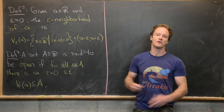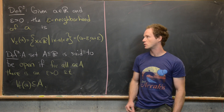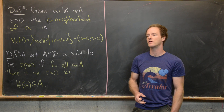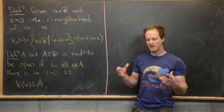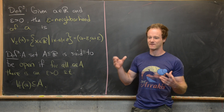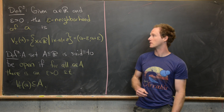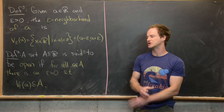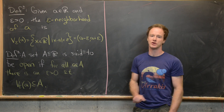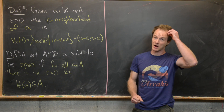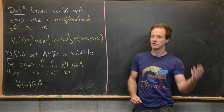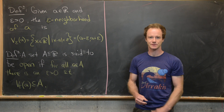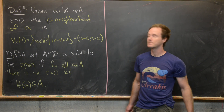We're moving into a portion of a real analysis course known as the topology of the real numbers. Think of this as the fine structure of the real number line. We're going to start talking about open sets, which is a really important notion in the study of topology in general, and as we look at the topology of R.